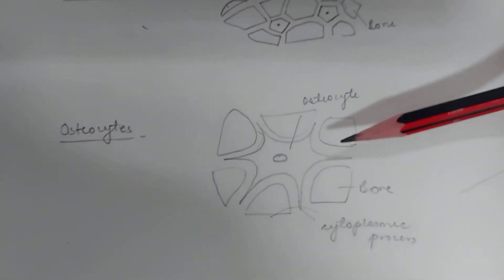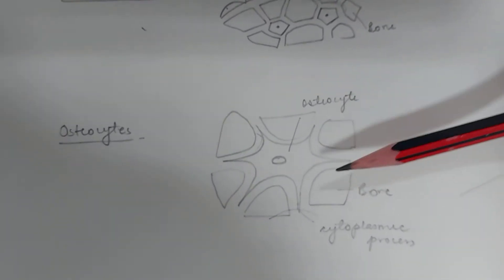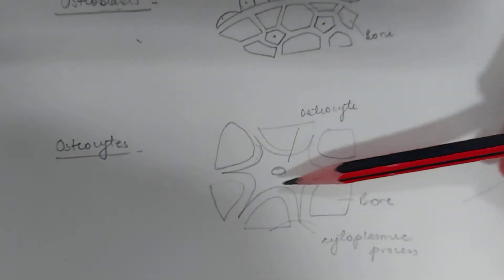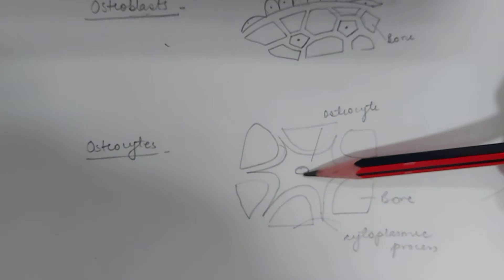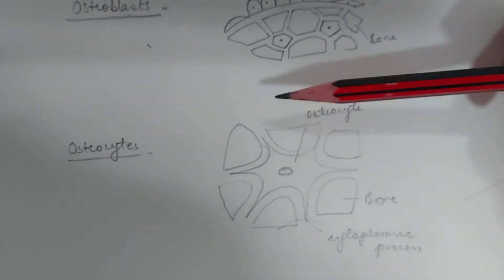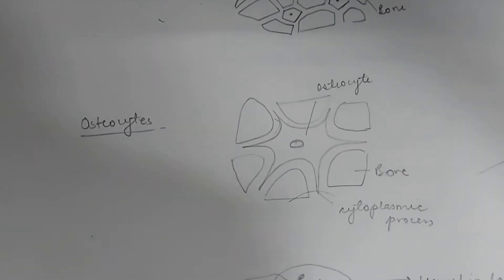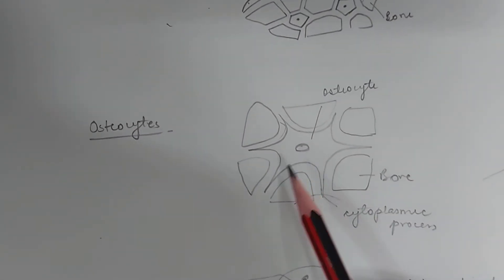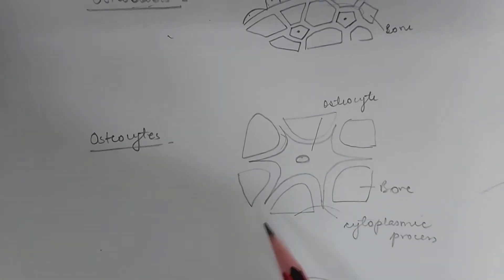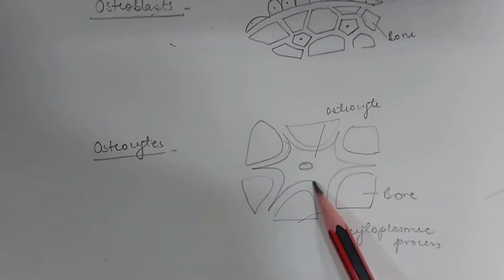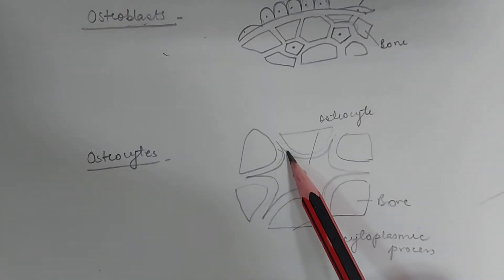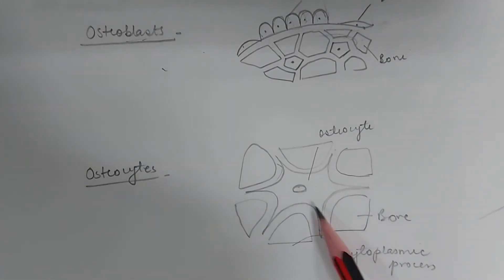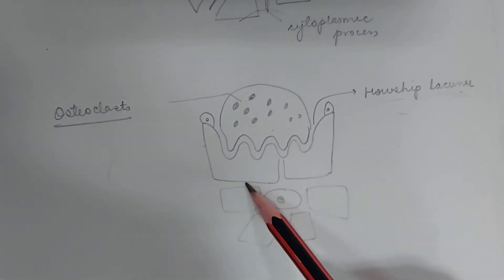Osteocytes are the mature form of the osteoblasts and are the main cells of bone tissue. These are flat and almond-shaped, having condensed nuclear chromatin and a single nucleus. They are trapped in the newly formed matrix in a space called a lacuna. Some cytoplasmic processes are also present in the osteocytes, and the cytoplasmic processes of adjacent osteocytes form gap junctions.